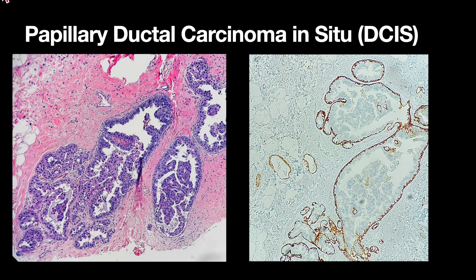Here we have DCIS with papillary architecture as well as some micropapillary architecture. A myoepithelial stain is done, and as you can see, the myoepithelial cells are retained in the periphery and are absent within the lesion. And here is the staining of the capillaries.